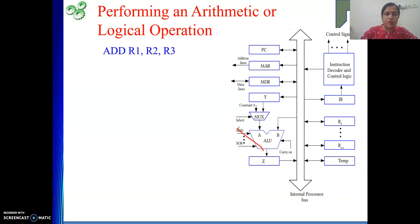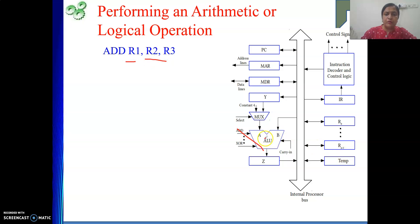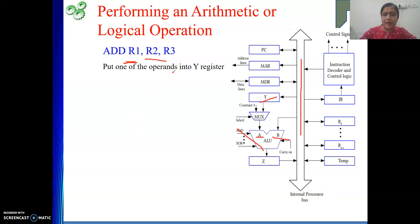Let's take the example ADD R1, R2, R3 — it adds the contents of R1 and R2 and puts the result in R3. According to our concept, we need to place the contents of R1 and R2 on the A and B inputs of the ALU. Since we cannot simultaneously provide two inputs on the same bus, first we will put one of the operands into the Y register — we will move R1's content onto the bus, and from the bus it will go to the Y register.